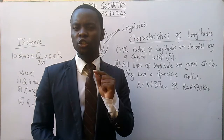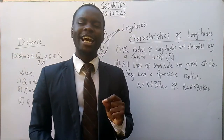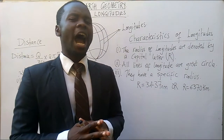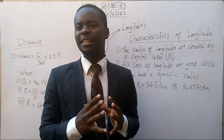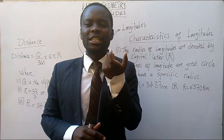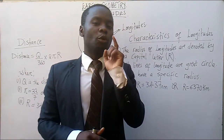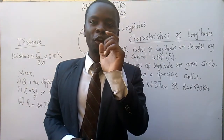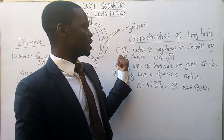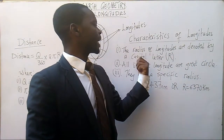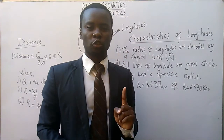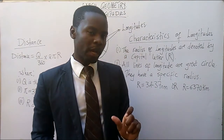The first characteristic you must know is that longitudes are denoted by a capital letter R. As far as Earth's geometry is concerned, whenever you see a capital R, you must know that you are dealing with longitudes. The radius of longitudes is denoted by a capital R, not a small letter r, but a capital R.